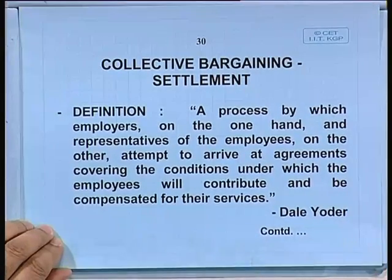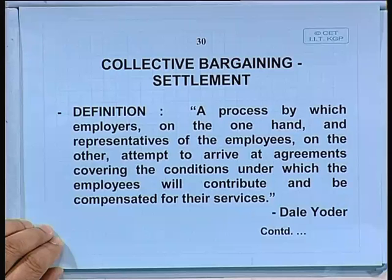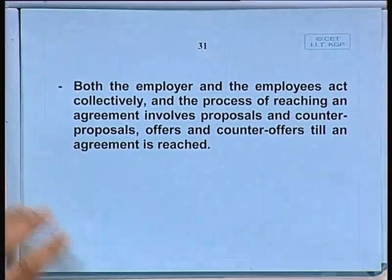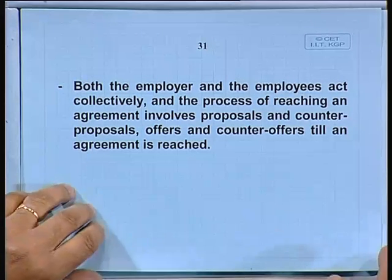Collective bargaining is a process by which employers on the one hand and representatives of employees on the other attempt to arrive at agreements covering the conditions under which employees will contribute and be compensated for their services. Both employer and employees act collectively, and the process involves proposals and counter-proposals, offers and counter-offers until an agreement is reached. This is in a nutshell industrial relations, and the next lecture will look further.